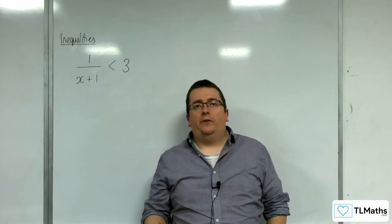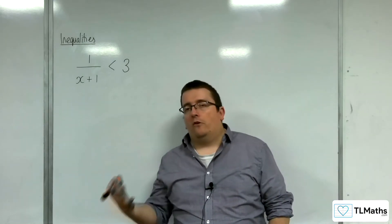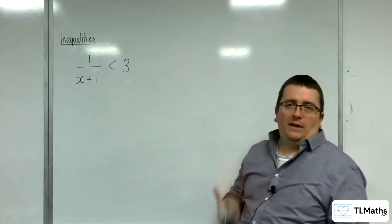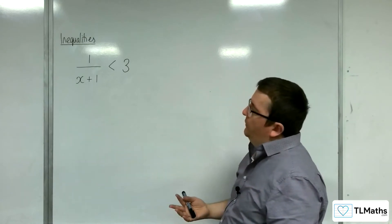In this section, we're going to be interested in solving inequalities that involve rational functions. A baseline example would be something like this: 1 over x plus 1 is less than 3.